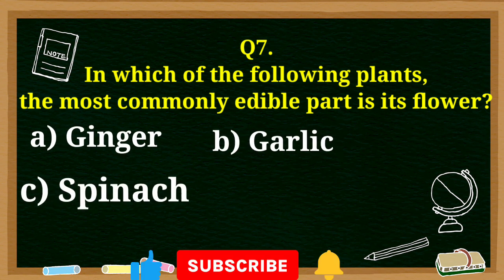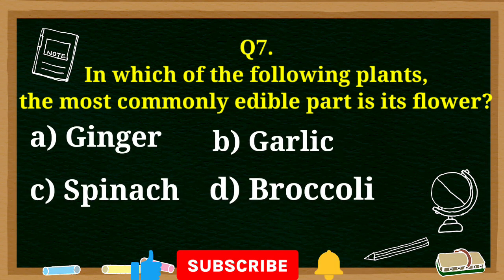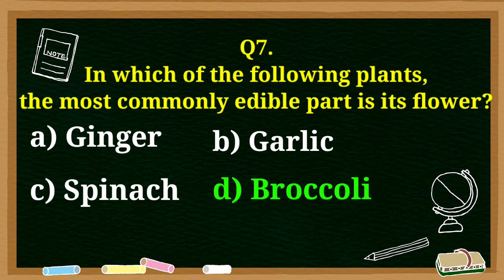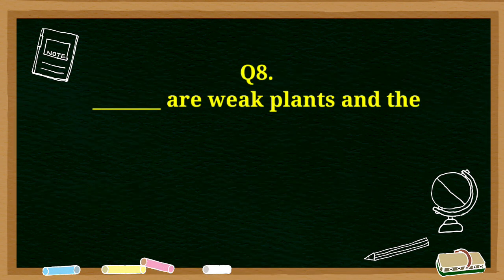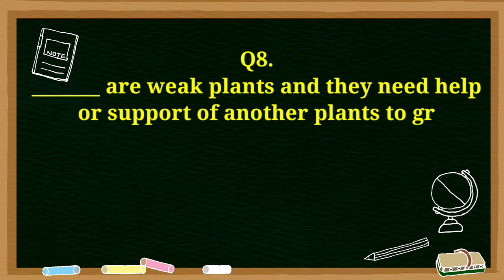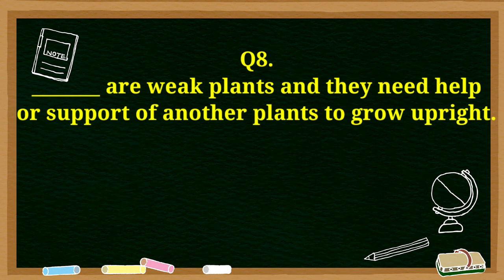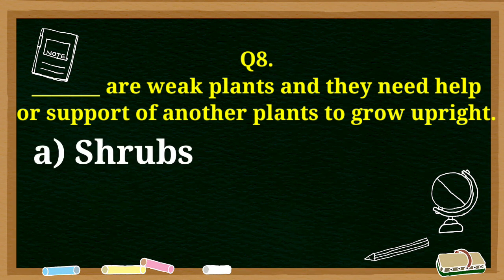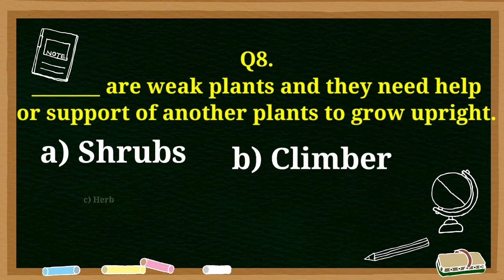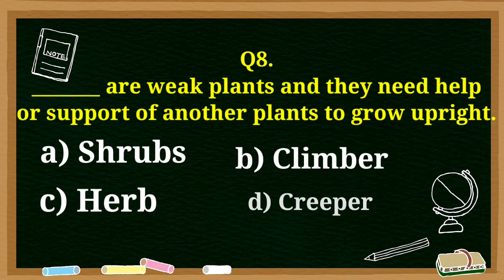In which of the following plants is the most commonly edible part its flower: ginger, garlic, spinach, or broccoli? The answer is broccoli. Dash are weak plants that need the help or support of another plant to grow upright: shrubs, climber, herb, or creeper?